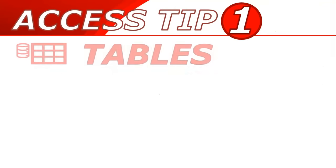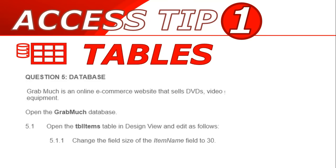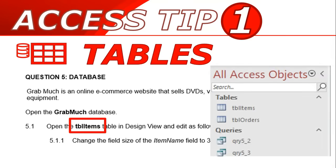The first tip is about tables, but the first part pertains to all of the questions. Make sure in the exam paper that you take note of which table, form, or report you are working in. When you go to the Access objects, make sure you go to the correct one. You don't want to be making changes to the wrong table and then have the marker not find the changes you've made. Look at the name and make sure you're using the right object.